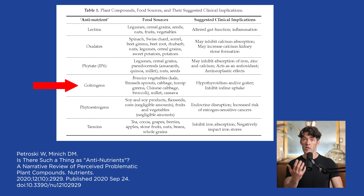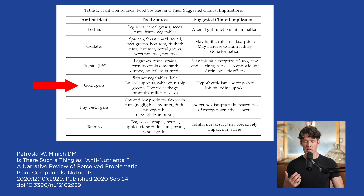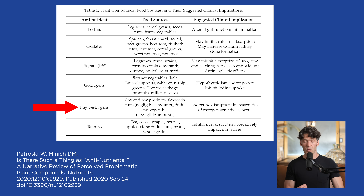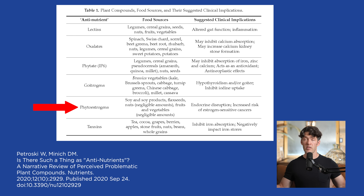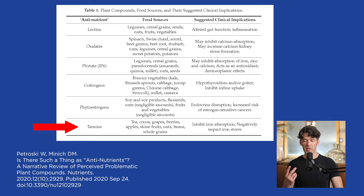Goitrogens are really common in brassica-type foods — Brussels sprouts, broccoli, cabbage, turnips — and this can lead to hypothyroidism and thyroid issues. Phytoestrogens are usually found in soy-based products as well as flaxseed, other nuts, and other vegetables, and these can have endocrine-disrupting effects. I'm not saying all plants are bad, but you need to understand there are anti-nutrients in plants. Tannins are found in coffee, tea, chocolate, grapes, berries, and whole grains, and these may negatively impact iron absorption and much more.